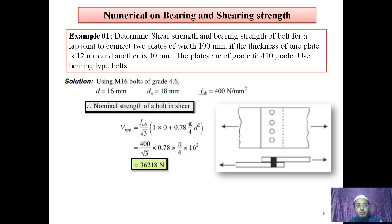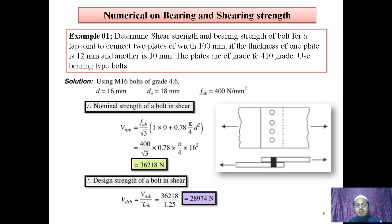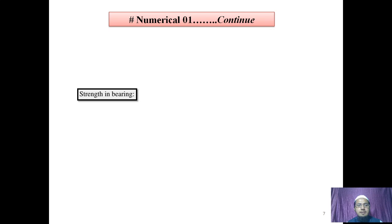Now we calculate design shear strength of bolt. Design shear strength equals nominal shear strength divided by factor of safety gamma MB. Substituting the values, we get design shear strength as 28,974 N, or 28.97 kN. So the shearing strength of the bolt is now calculated.